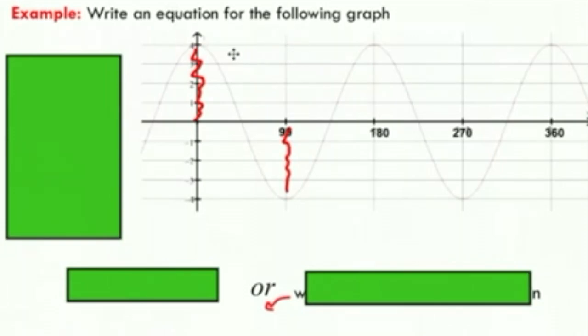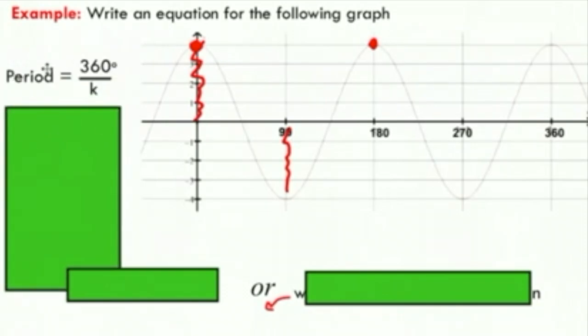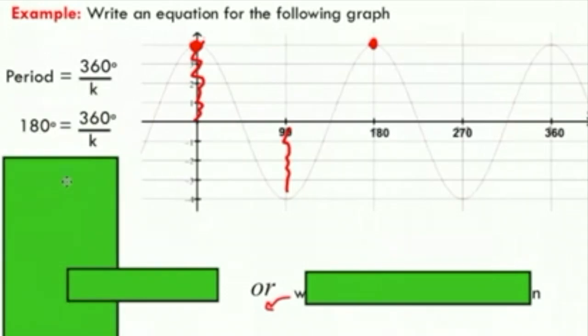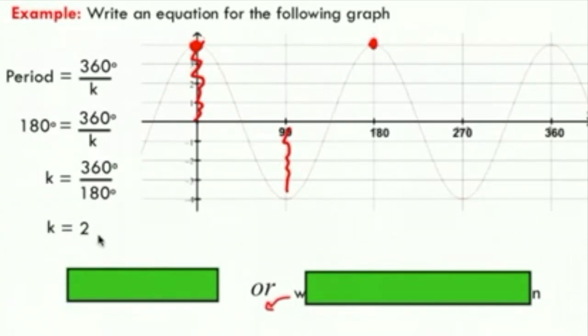The next thing we might as well look at is the period. You can see that it goes through one full cycle in 180 degrees, so that's going to help us come up with our K value for our equation. We know a periodic function has a period of 360 over K. We can solve for K by substituting in our new period of 180 degrees, and you'll see that you end up with two for your K value.